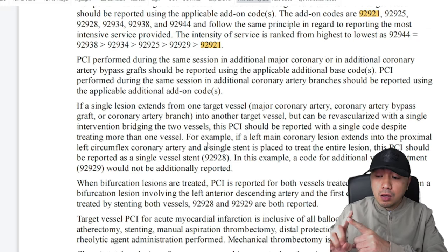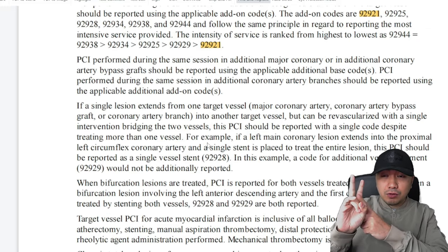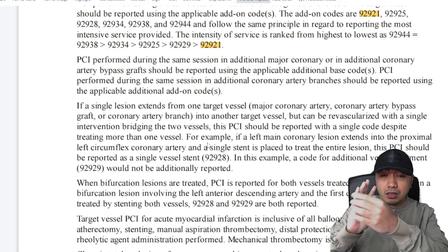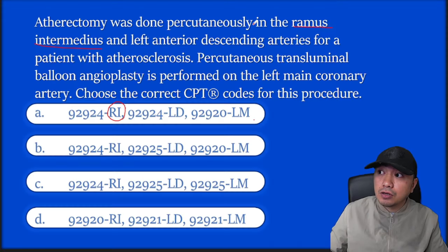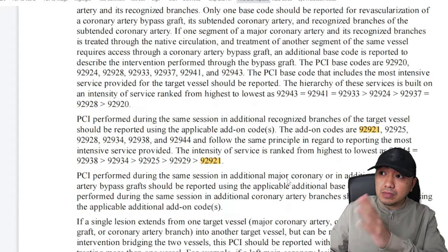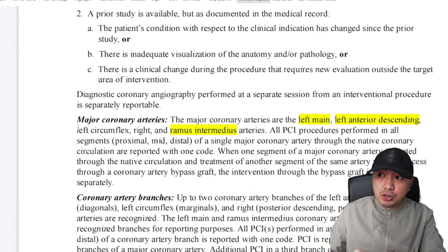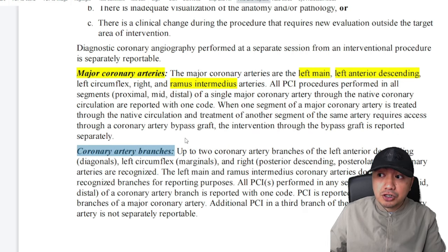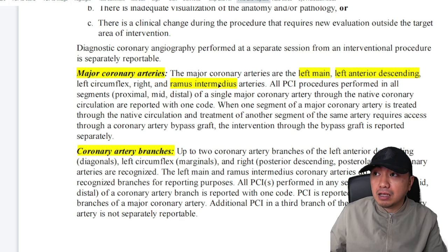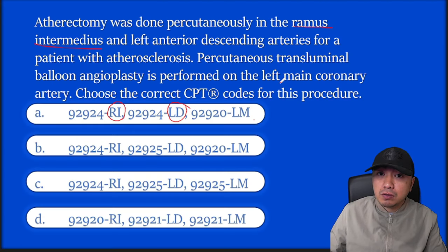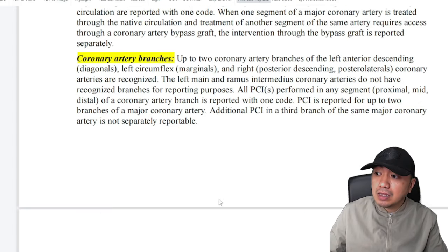The concept here is to check if the doctor has done only balloon PTCA, atherectomy, stenting, or a combination. In this case the doctor has done atherectomy only for the ramus intermedius and left anterior descending. Obtain the modifiers for that. The concept is to check if it's a major coronary vessel or just a branch. You have left main, left anterior descending, and ramus intermedius highlighted. Just code whichever was done for the ramus intermedius — that's your atherectomy. So go to 92924.